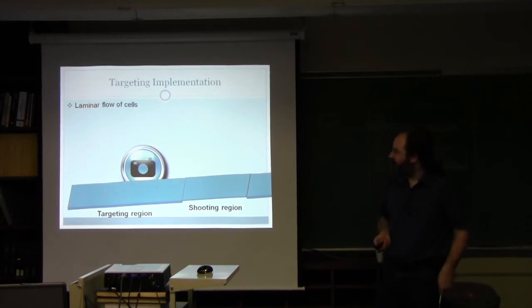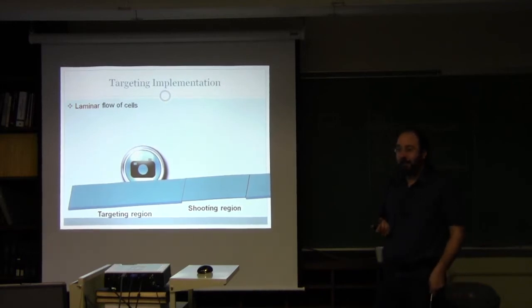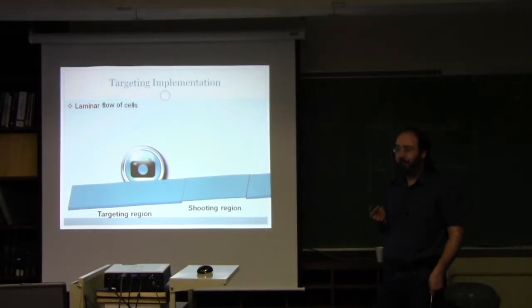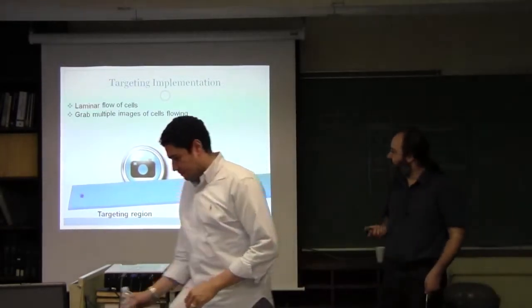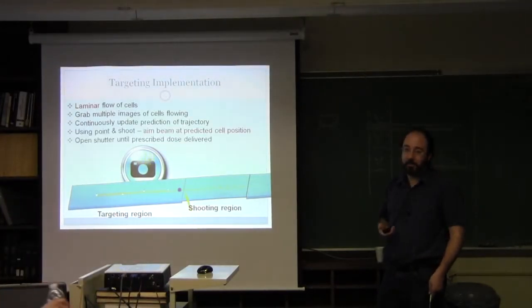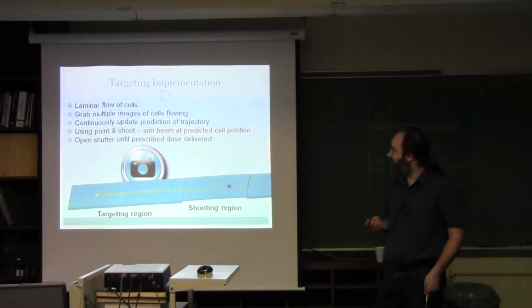First of all, how do we do the targeting? The nice thing about microfluidics is you can set up your channel so that cells flow laminarly. So basically they're flowing in straight lines, so you can grab multiple images and predict where the cell is going to be at any given time, and then irradiate it.